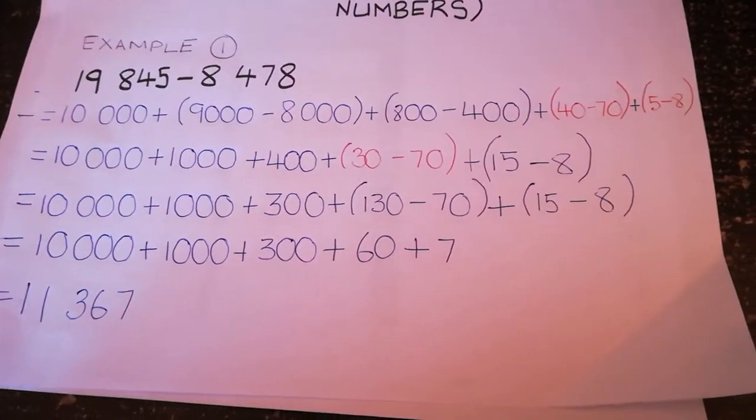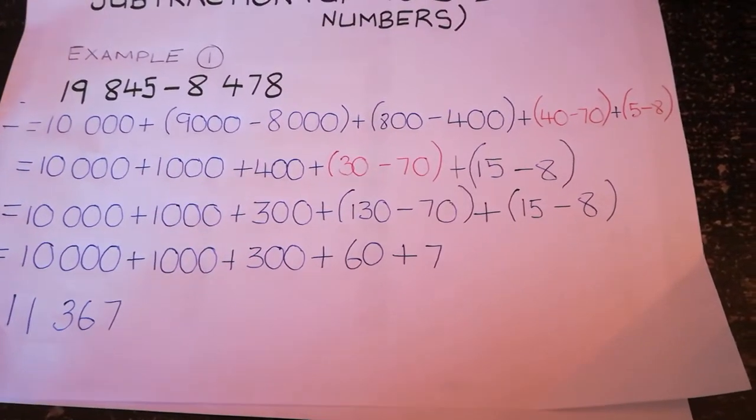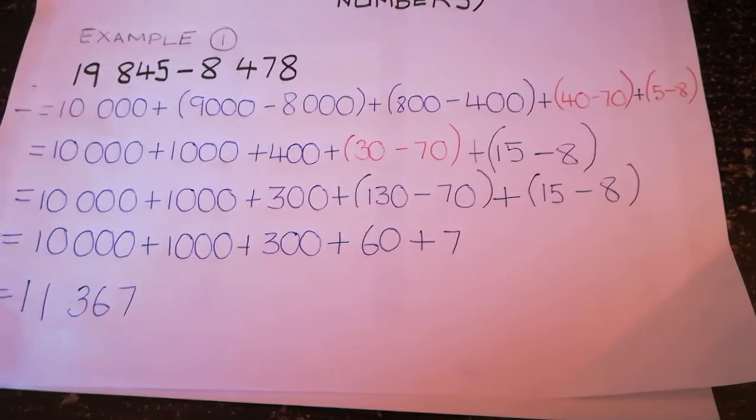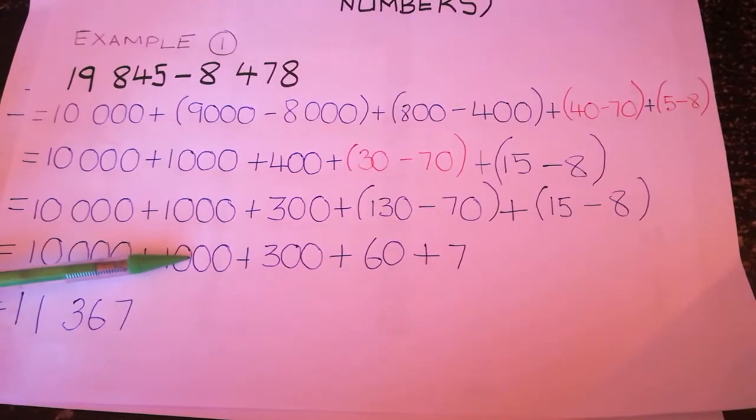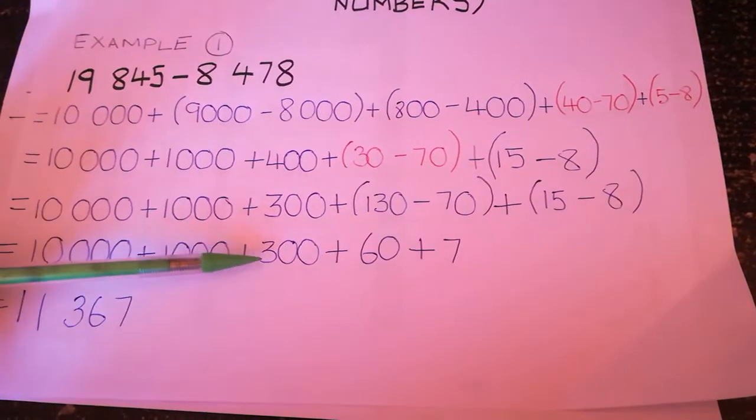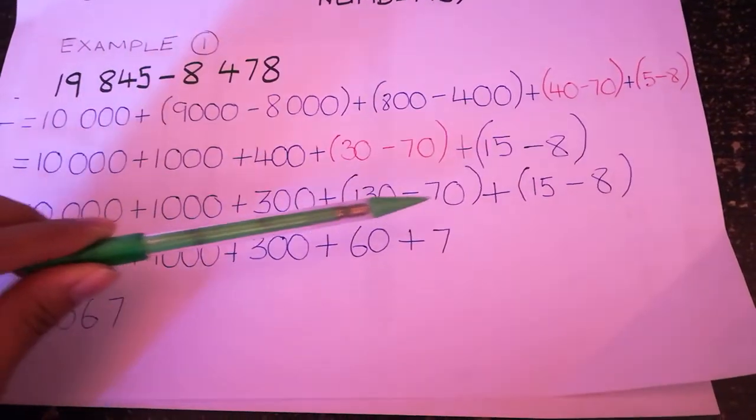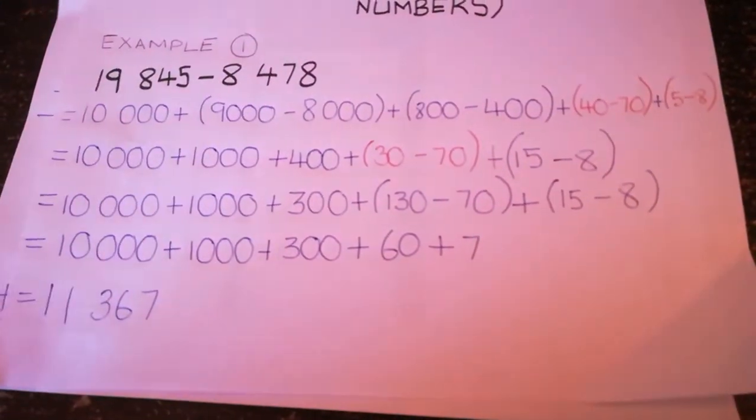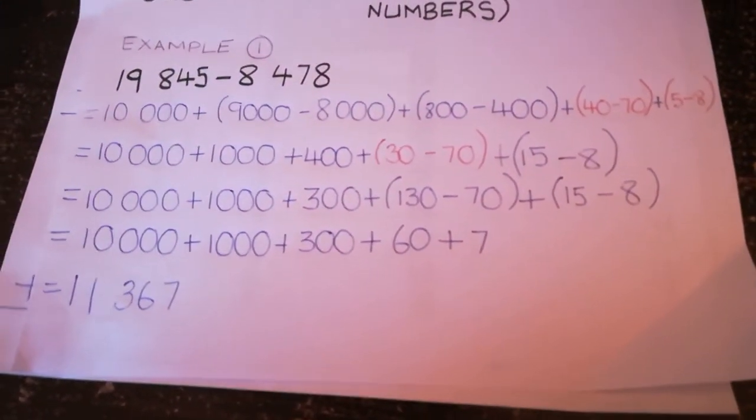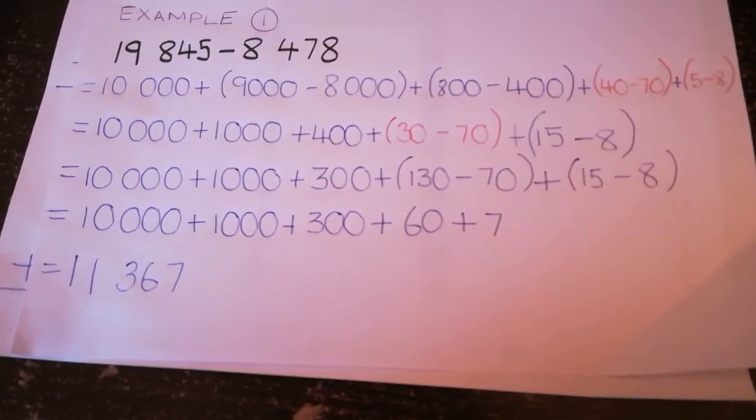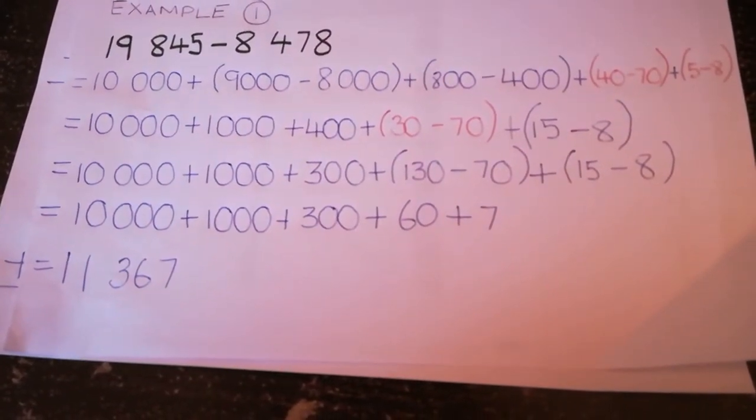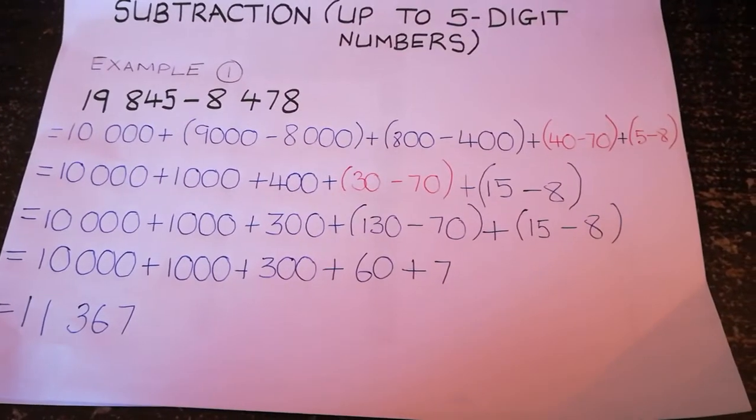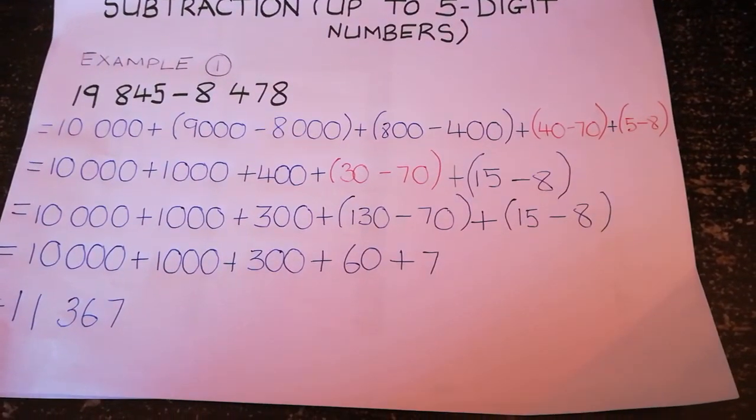Now that our numbers are big enough to subtract, we can solve it. We have 10,000 plus a thousand plus 300. 130 minus 70 is 60, and 15 minus 8 is 7. You just add them all up, and you get the answer of 11,367. I hope that you understand.